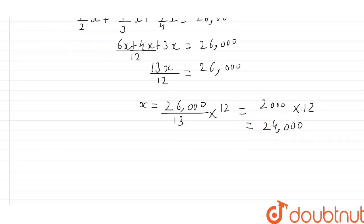Right, so the share of each person will be 1 upon 2x, which will be equal to 1 upon 2 into 24,000, which will be equal to 12,000.